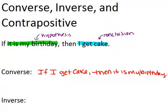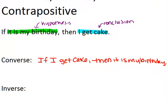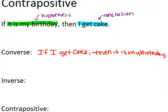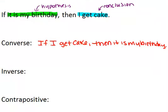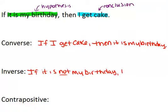I'm not talking at all about whether these things are true yet — I'm just creating new sentences. The inverse of my original sentence, 'if it is my birthday, then I get cake,' is what is created when I negate both parts of the original sentence. That would be: if it is not my birthday, then I do not get cake. So in the inverse, you keep the hypothesis and conclusion where they are in the sentence, but you negate both of them.